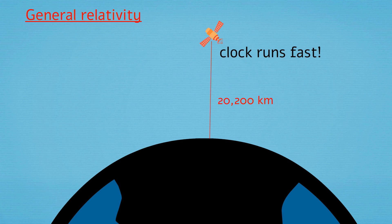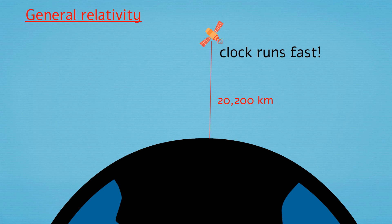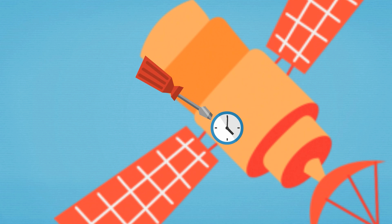Because of general relativity, the satellite's increased distance from the massive object that is Earth means that its clock runs fast. Unfortunately, the two effects don't perfectly offset. So engineers adjust the satellite's clock to compensate for these effects.